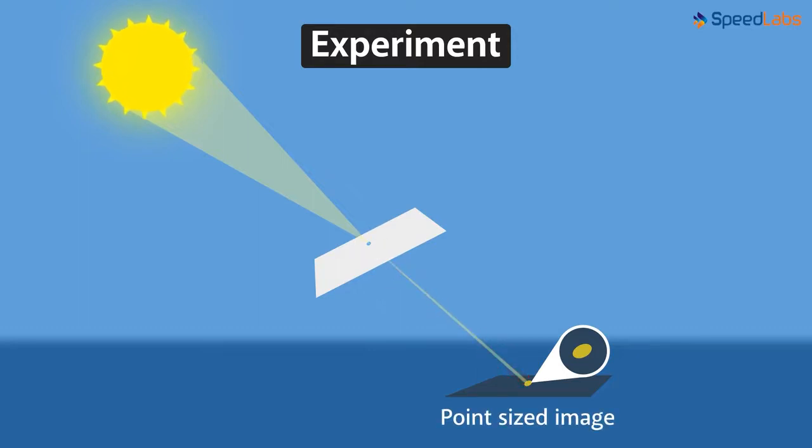What will happen if you make this hole bigger? More light will pass through the hole now. But look at the image. Although its size is increased, it's distorted.